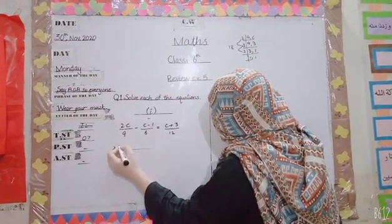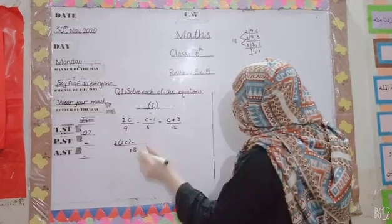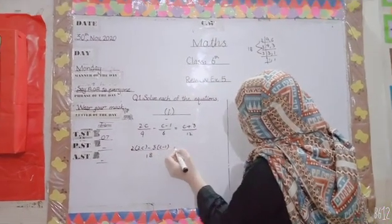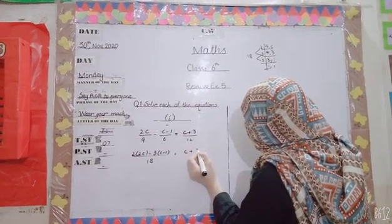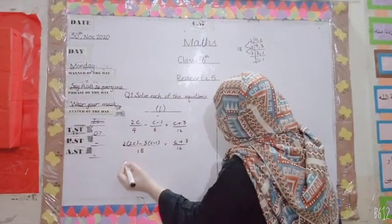9 goes into 18 twice, so multiply by 2. Converting the numerator: 2c times 2 gives 4c. For the second fraction, 6 goes into 18 three times.